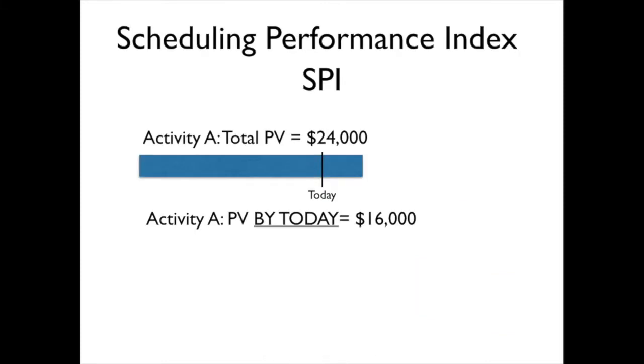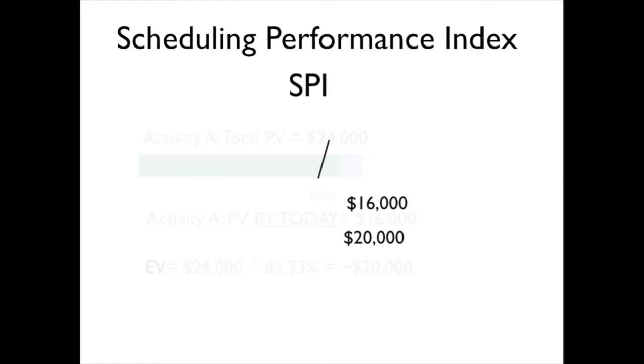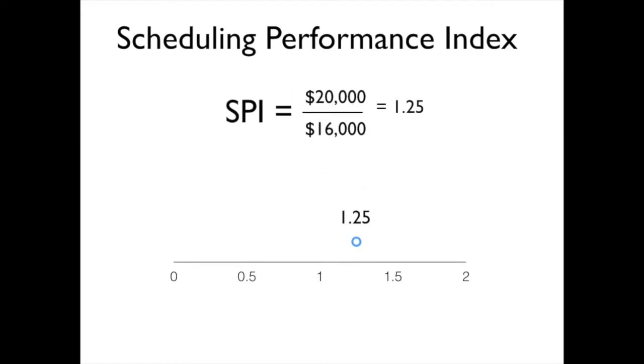Let's look at another example. Once again, we have this total planned value of $24,000, a planned value by today of $16,000. However, in this case, our activity has gone much better than planned, so we have 83.33% of that activity is complete. So our earned value is $24,000 times 83.33%, and we get $20,000. If we do the division here of $20,000 divided by $16,000, we get an SPI of 1.25.